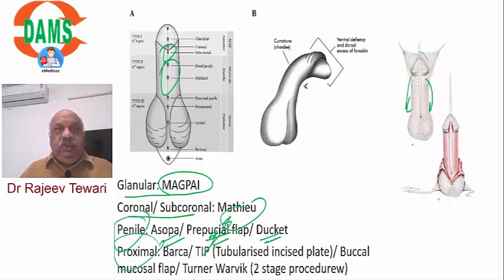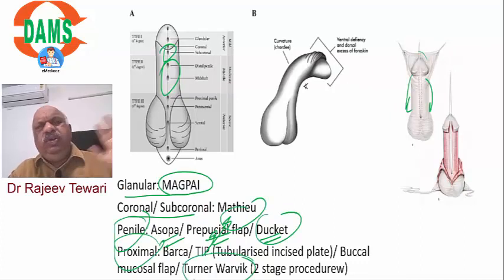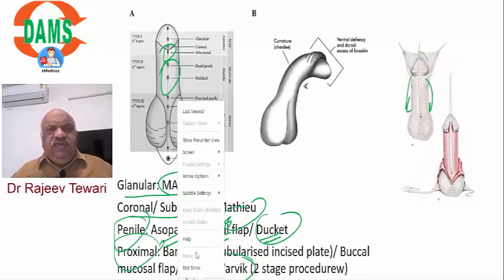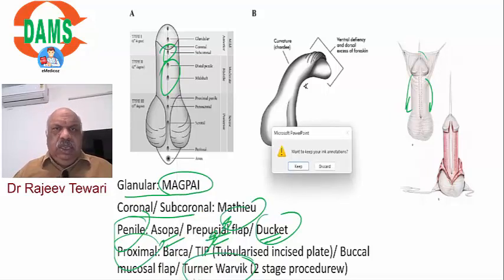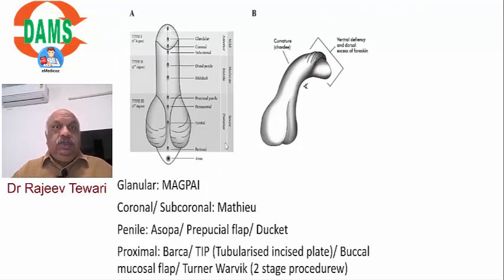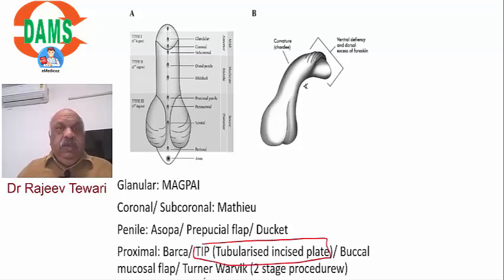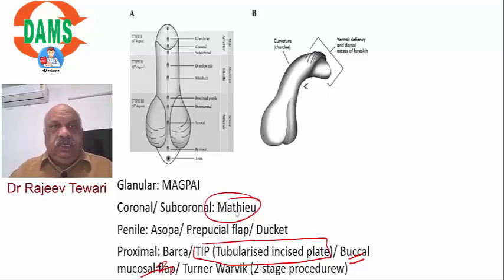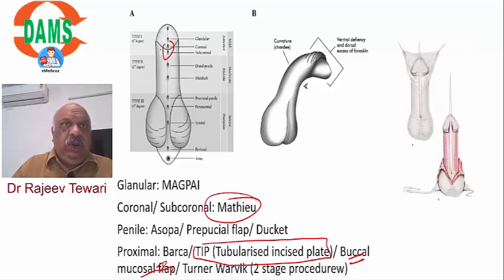Thiersch-Duplay is a two-stage procedure - an older surgery of five to six decades ago, but still used. Currently, TIP (tubularized incised plate urethroplasty) is preferred for distal types, and buccal mucosa graft for proximal types. MAGPI is also commonly done for distal (coronal/subcoronal) hypospadias.